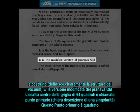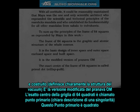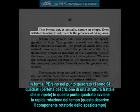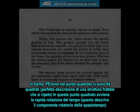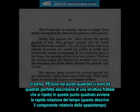It is the modified version of pranava ohm. The exact center of the frame of 64 squares is called primal dot — again, a fair description of singularity. This primal dot is actually square in shape. Even within the square dot, there is the presence of 64 squares — a perfect description of a fractal recursive structure. Within the square dot, there occurs the speedy gyration of time, and this describes the spin component of space-time.